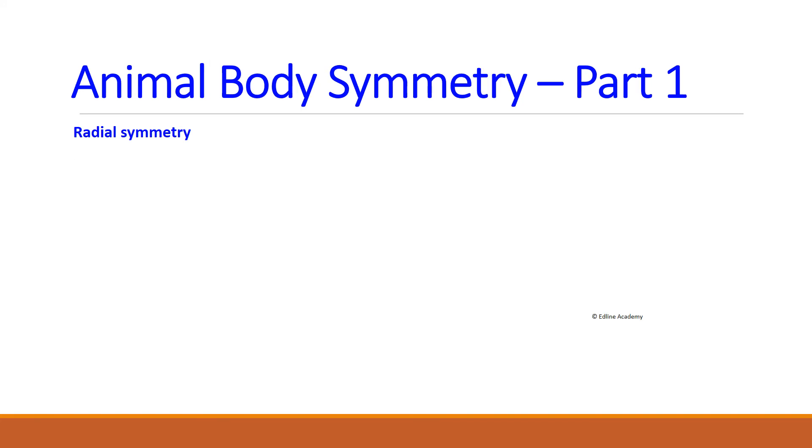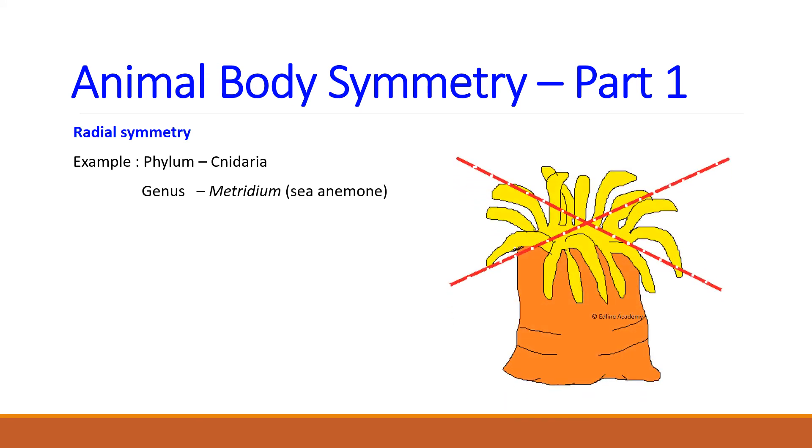Now I'm going to show you one example for radial symmetry. So it's Metridium which belongs to phylum Cnidaria. So Metridium or sea anemone has column shaped body and around the mouth it has several tentacles. If we cut this animal along any of these axes, we are able to get two identical halves.